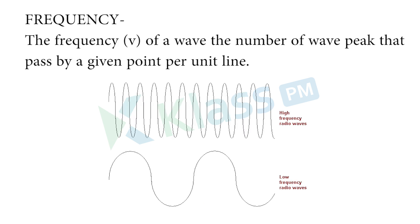What is frequency? Frequency is represented with V. The frequency of a wave is the number of wave peaks that pass by a given point per unit of time — meaning how many times, at a given point per unit time, the peaks are arriving. How frequent the peaks are coming is nothing but frequency.